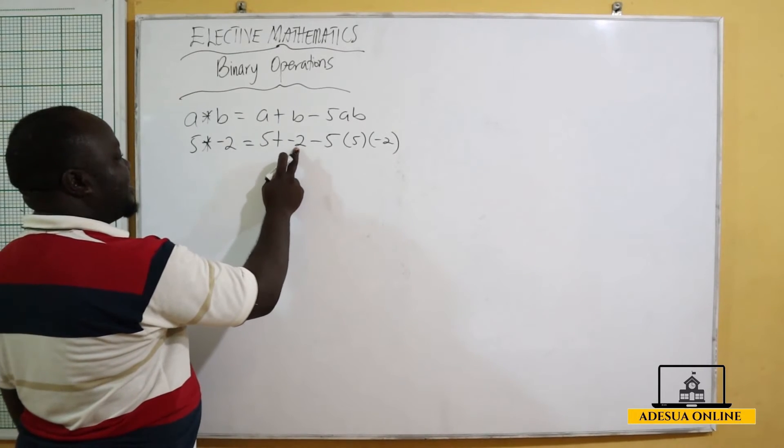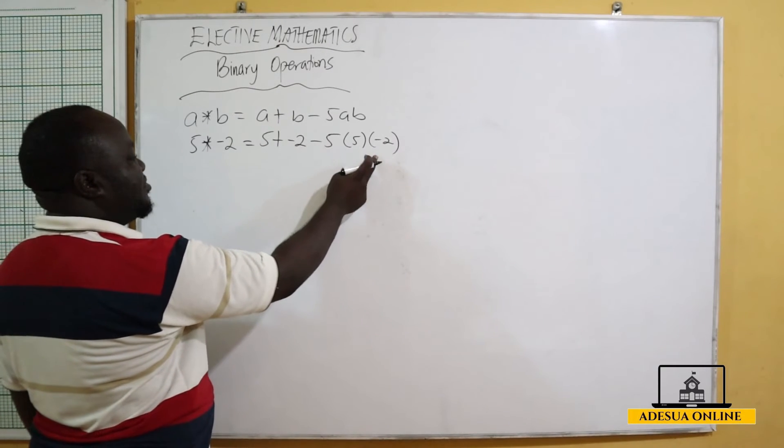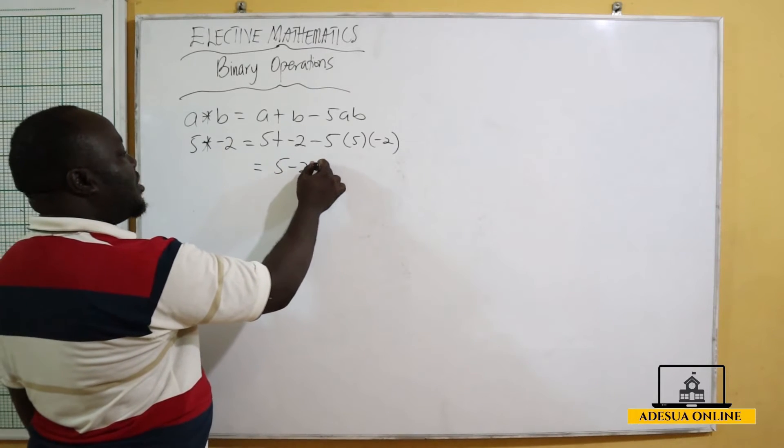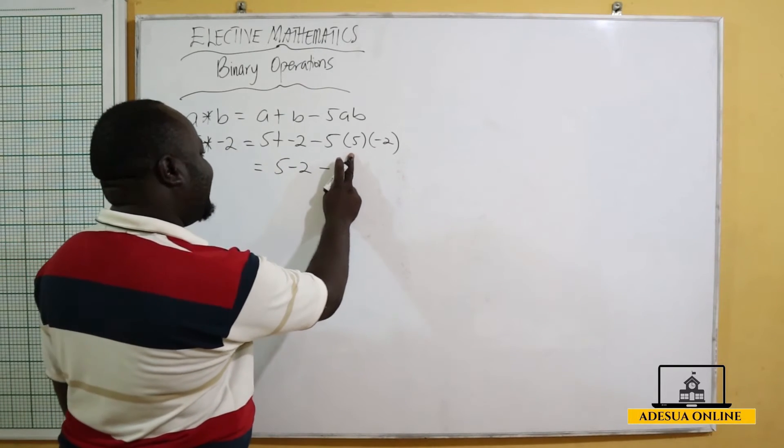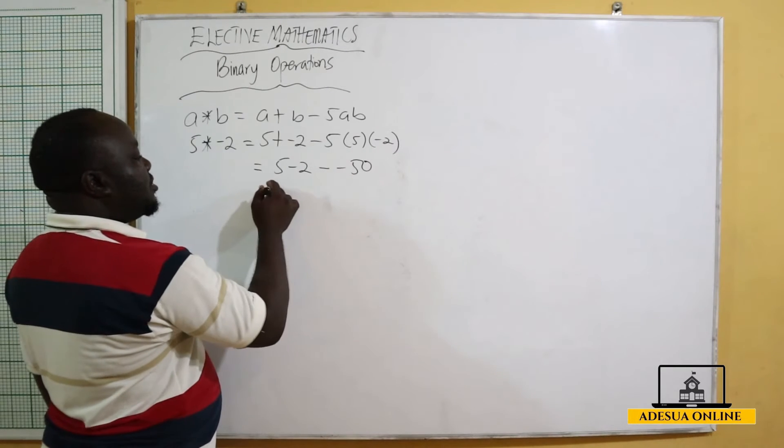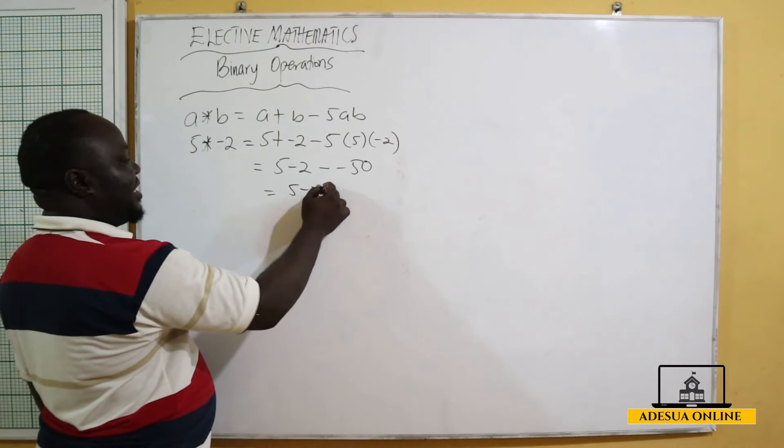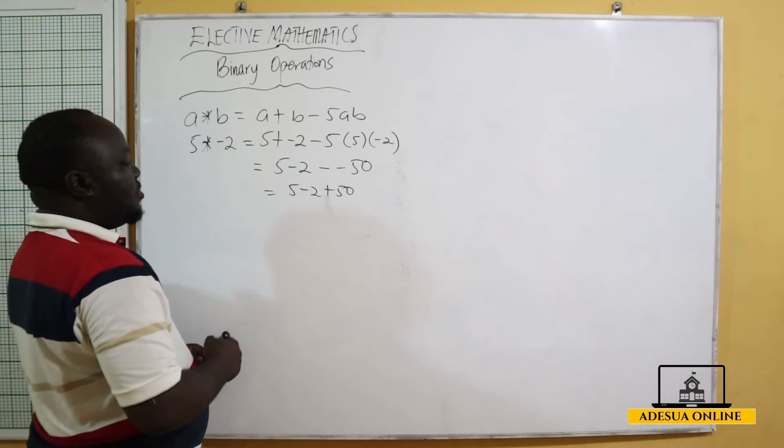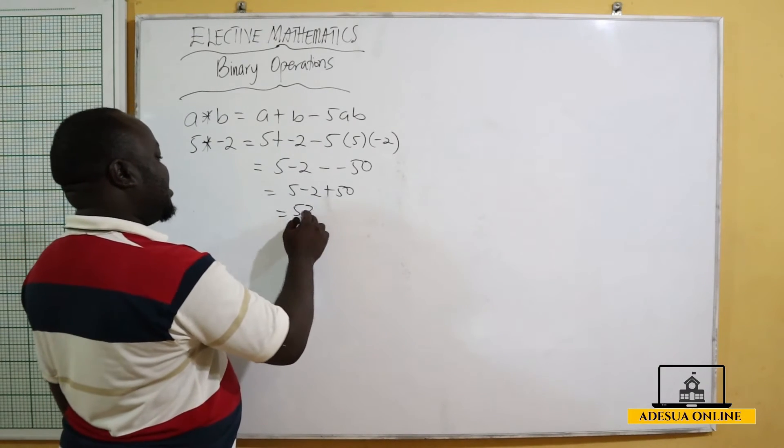You see a plus b minus 5ab. This is going to give us 5 minus 2 minus 5. Five times 5 is 25, 25 times minus 2 is minus 50. So this will be 5 minus 2 plus 50, which will be 55 minus 2, which is equal to 53.